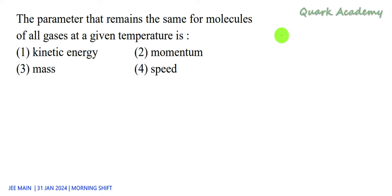The parameter that remains the same for molecules of all gases at a given temperature is asked, so let's check one by one. The kinetic energy of a molecule, the average kinetic energy, we can write it as 3/2 K into T, where K is Boltzmann constant, T is temperature, and it is the same for all the molecules.